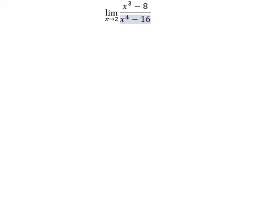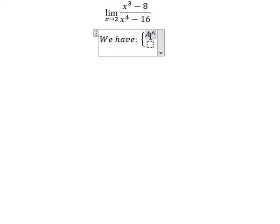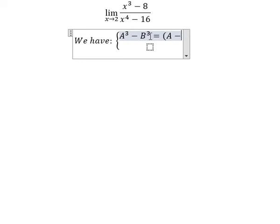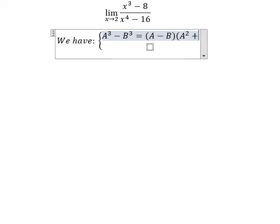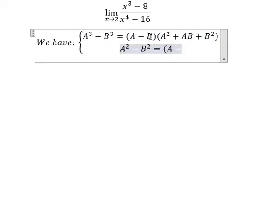Hello everybody, today I will talk about calculus. The topic is about limits. I will show you how to answer using the formulas. We have: a to the power of 3 minus b to the power of 3 equals a minus b, multiplied by a squared plus ab plus b squared. Next, we have a squared minus b squared equals a minus b multiplied by a plus b.